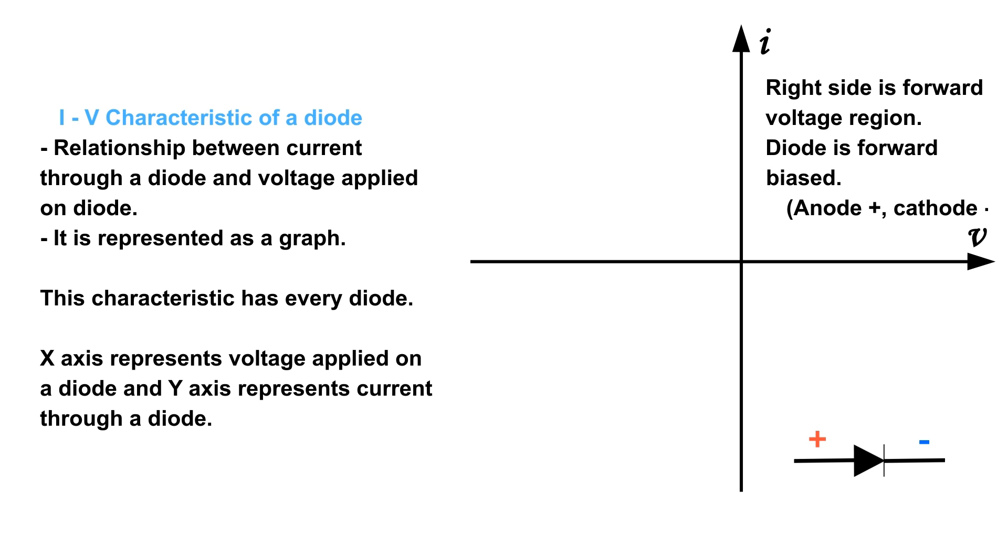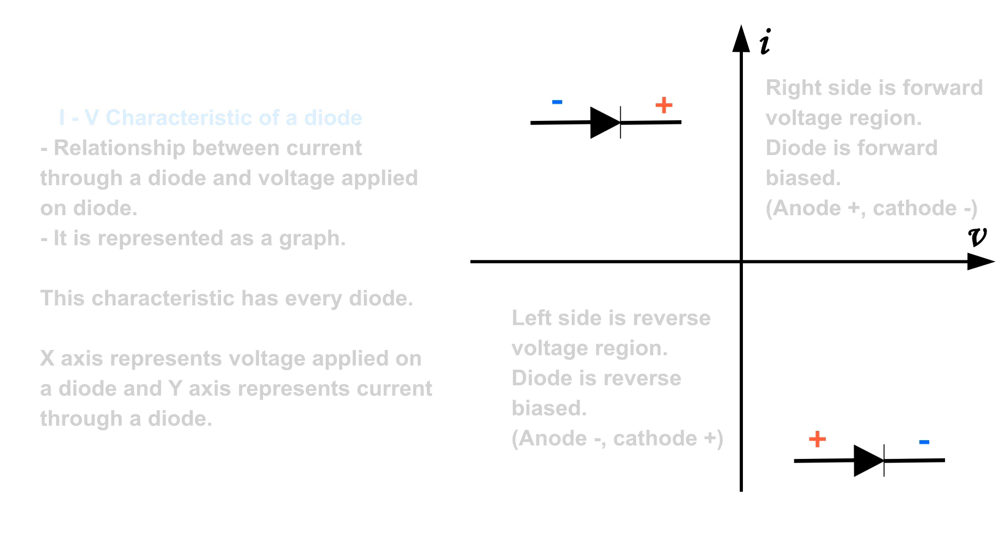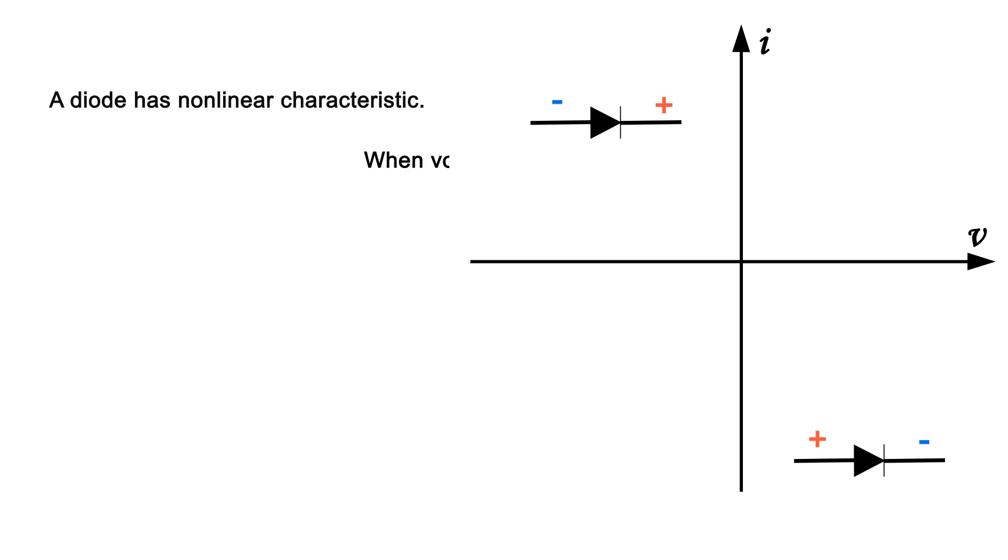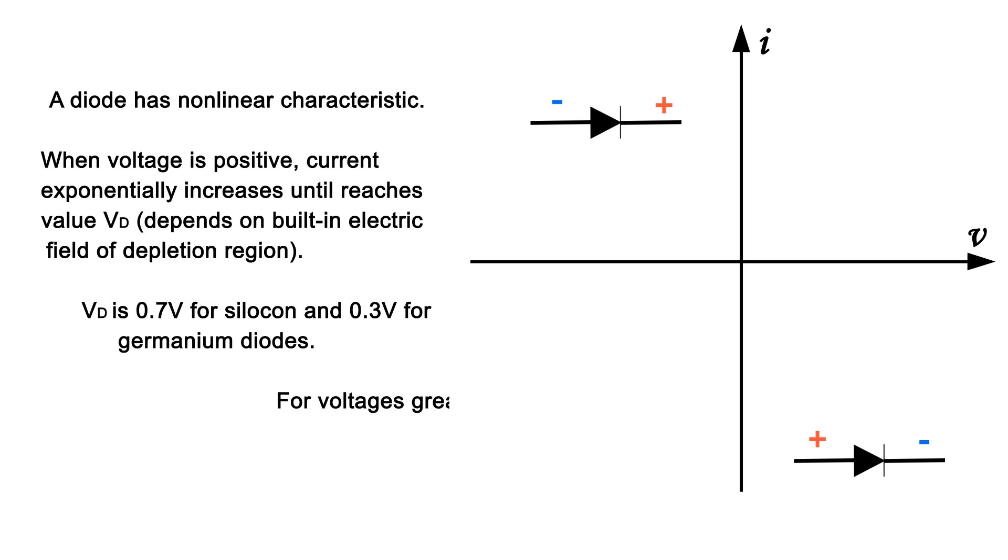The right side is forward voltage region where the diode is forward biased (anode +, cathode -). The left side is reverse voltage region where the diode is reverse biased (anode -, cathode +). A diode has nonlinear characteristic. When voltage is positive, current exponentially increases.